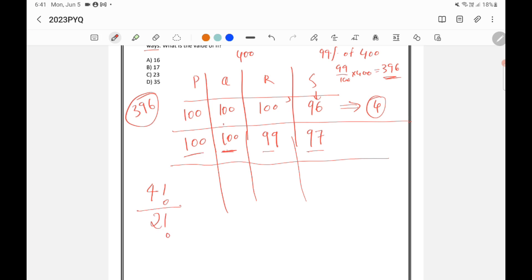So if you do 4 factorial by 2 factorial, you will get 12. So there are 12 possibilities, 12 ways in which the group 100, 100, 99, 97 can be arranged among 4 papers, P, Q, R, and S.